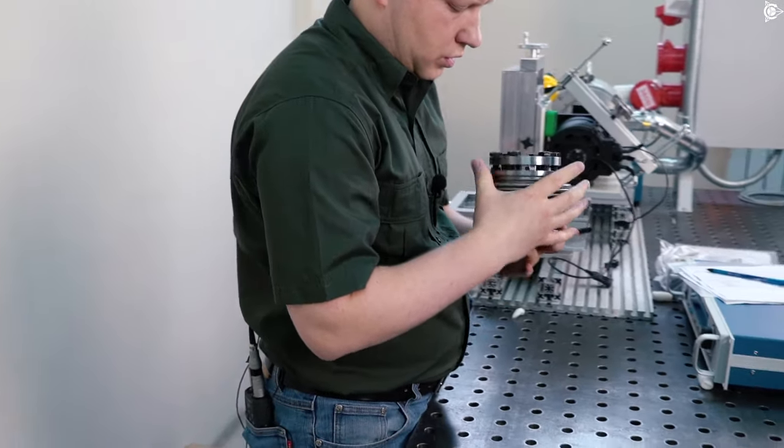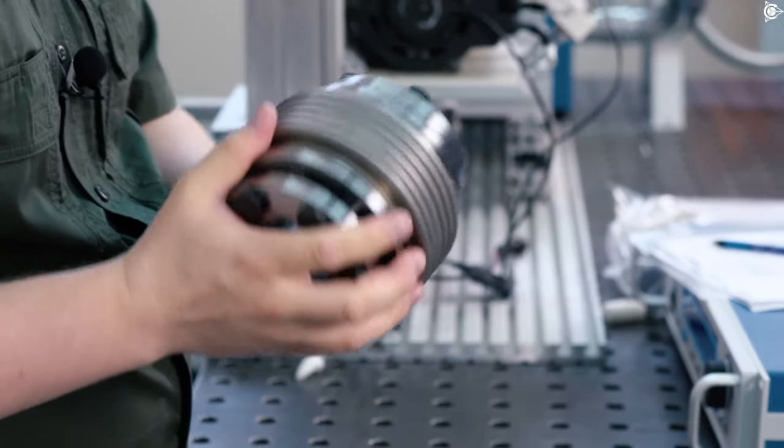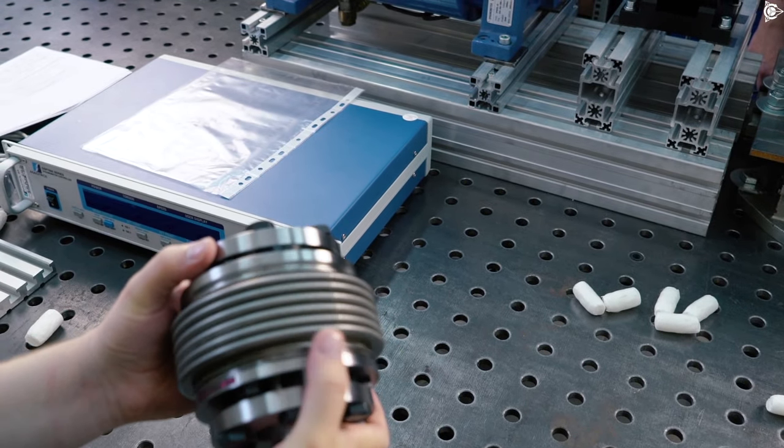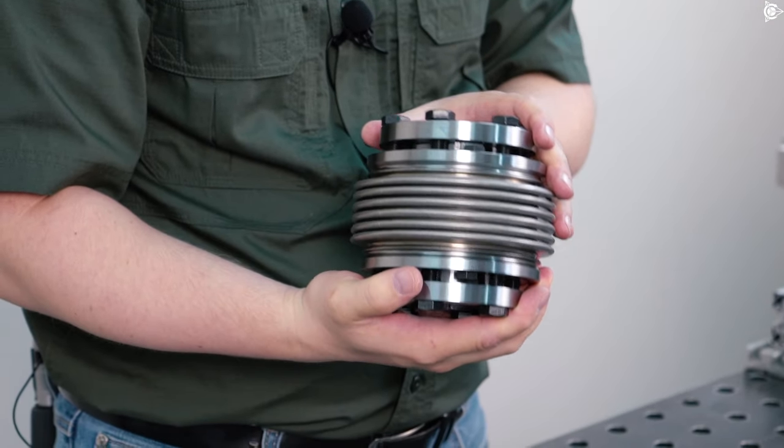It's designed for a shaft with two spline connection. These are the two grooves. Because we have really high torques, and without the splines we can't hold the shaft.